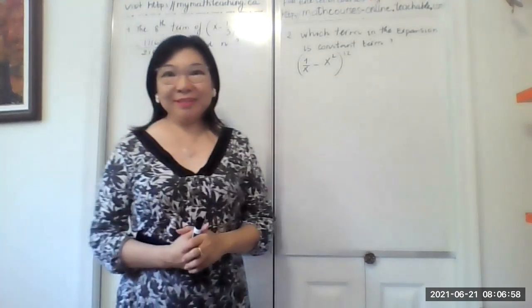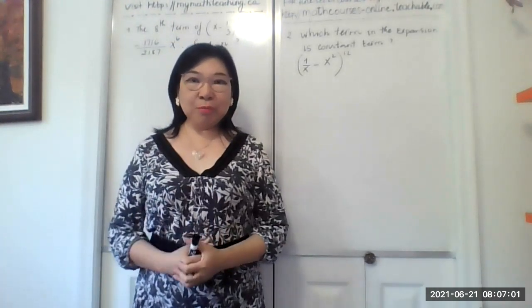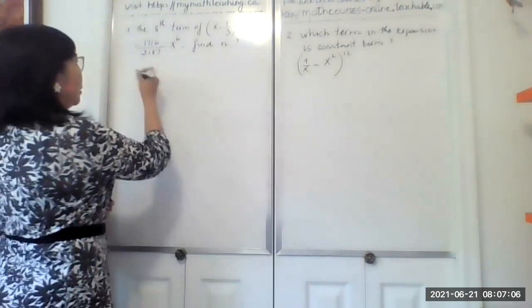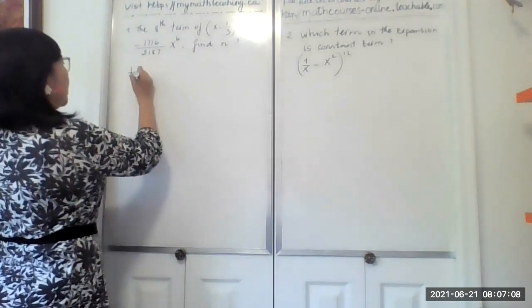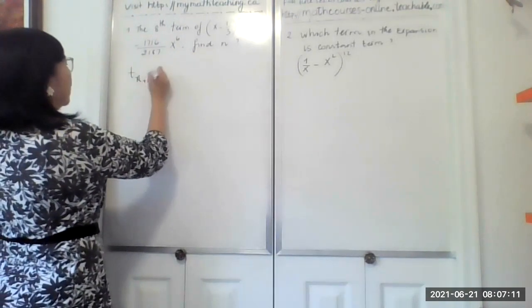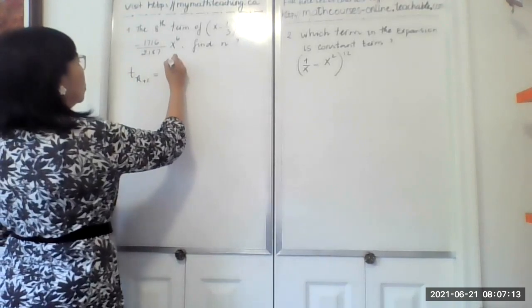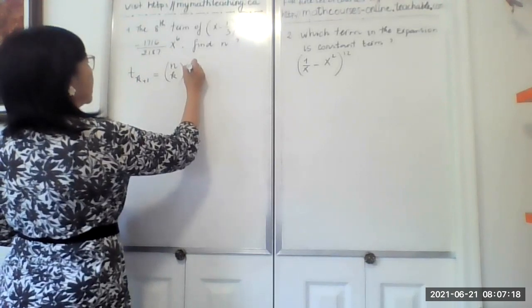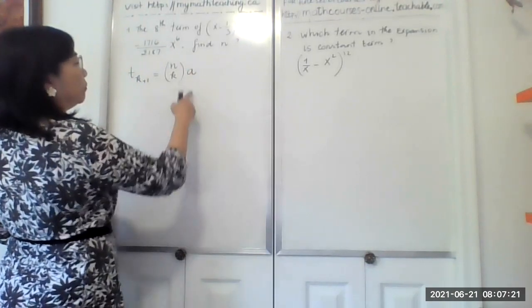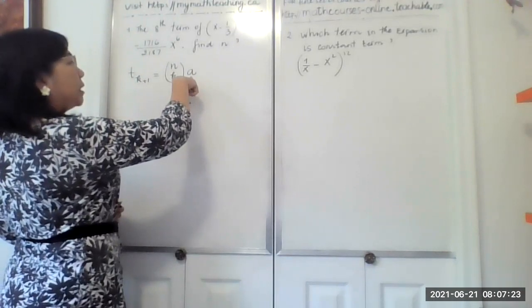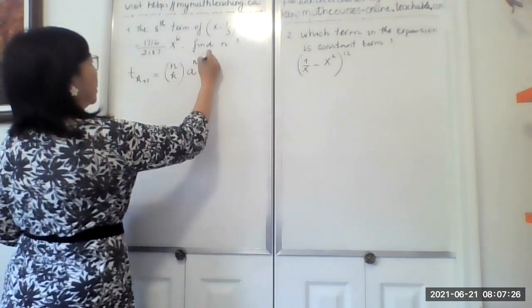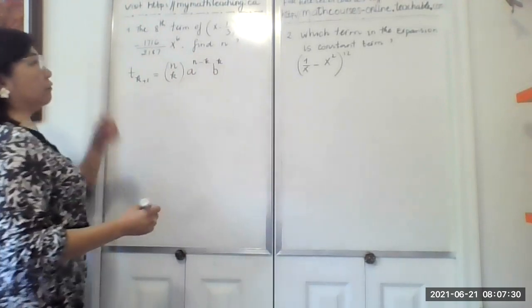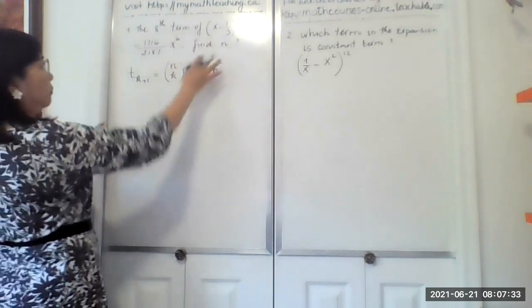The easy way is just plug in the formula and solve for n. The formula is t sub k plus 1 equals n choose k times a to the power n minus k times b to the power k. So let's plug in our formula for this.